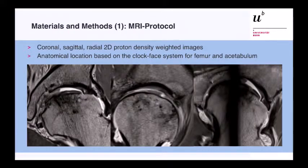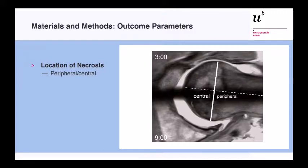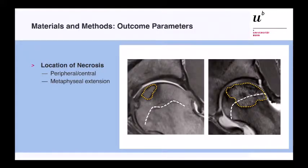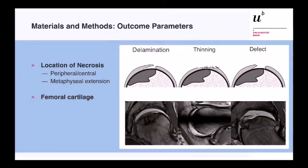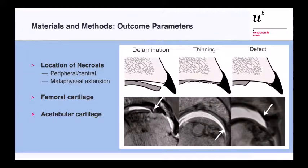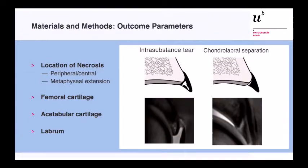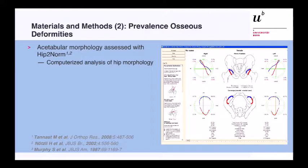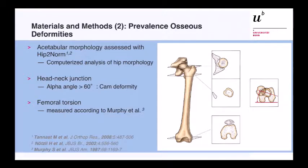We used three standard sequences: coronal, sagittal, and radial views. The sagittal and coronal views were very helpful because they avoid the artifact present in radial slices. We assessed the location of the necrosis — whether peripheral or central — and whether the necrosis extended into the metaphysis. Femoral cartilage lesions were described as delamination, thinning, or full-thickness defect. We assessed the same parameters for acetabular cartilage, the shape and tear pattern of the labrum (intrasubstance tear or chondrolabral separation), and hip morphology including alpha angle and femoral torsion.